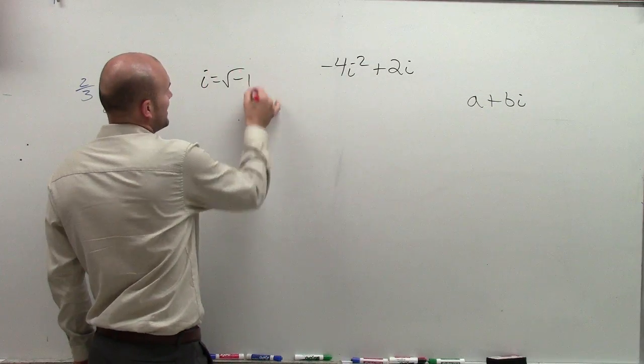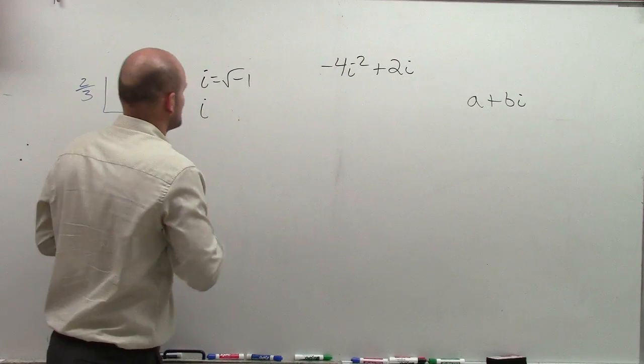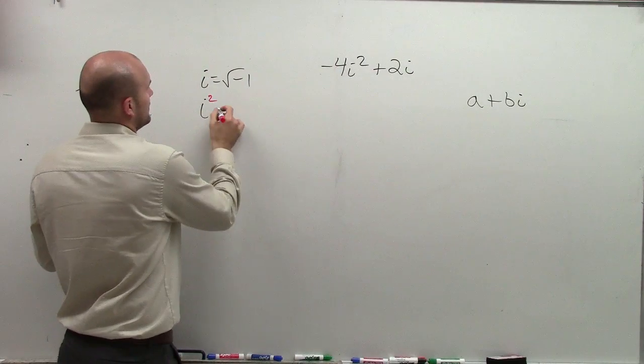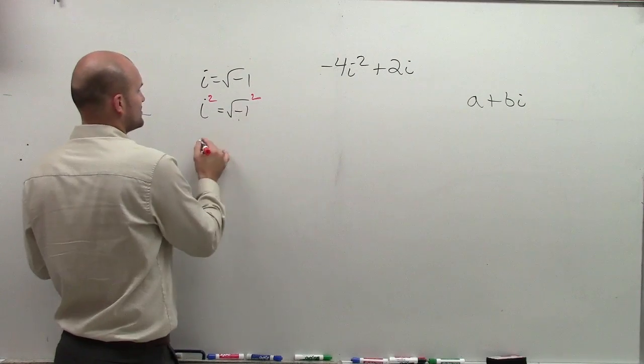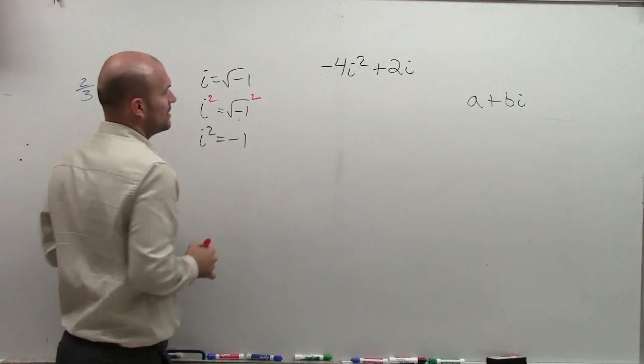So what can I do with i and i squared? Well, remember, i equals square root of negative 1. So i squared equals the square root of negative 1 squared, which then equals i squared equals negative 1.